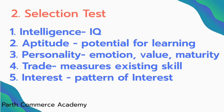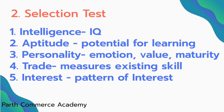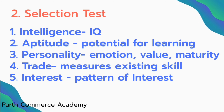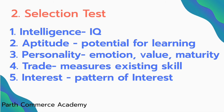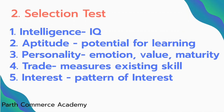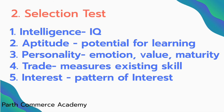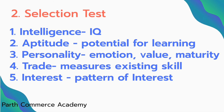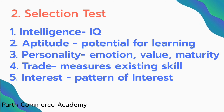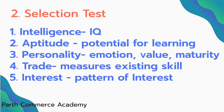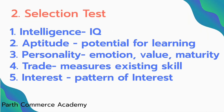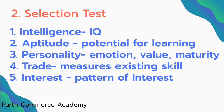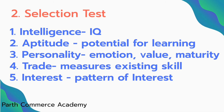Personality test gives information about overall personality, including clues about a person's emotions, reactions, maturity, and value system. Trade test measures the existing skill of individuals, measuring the level of knowledge and proficiency. The difference between aptitude test and trade test: aptitude test measures potential to acquire skills, while trade test measures actual skills possessed by individuals. Interest test is used to know the pattern of interest of an individual.